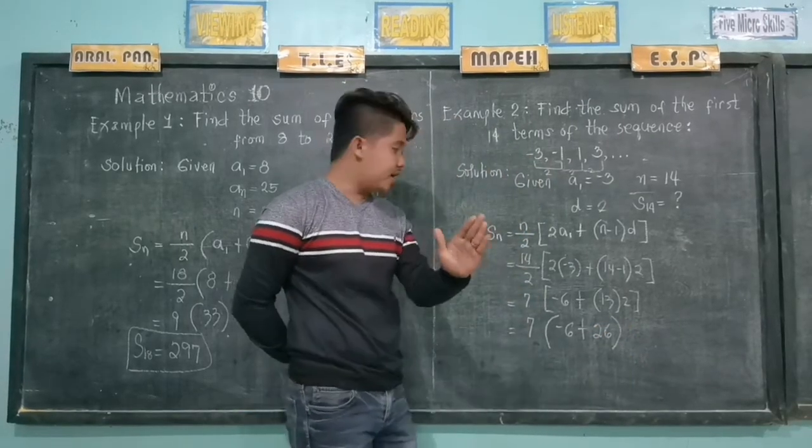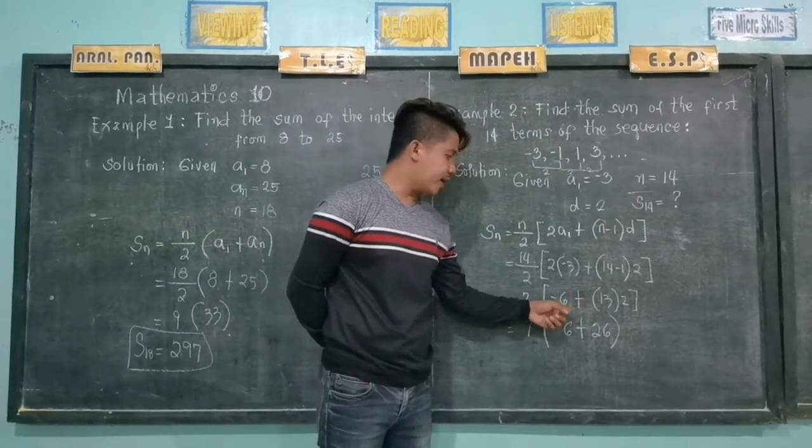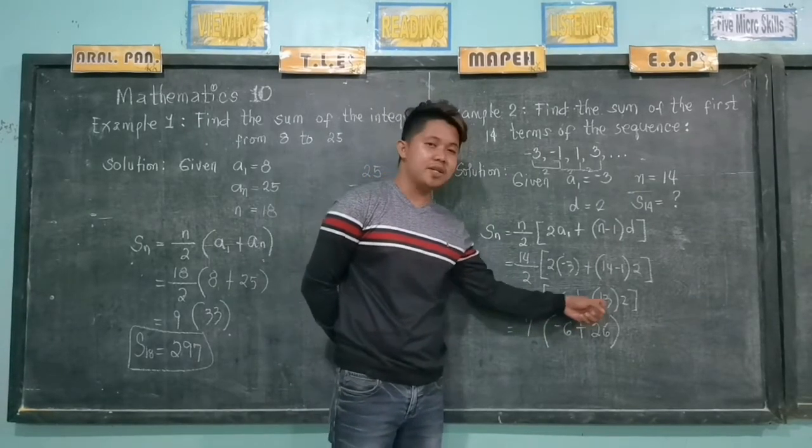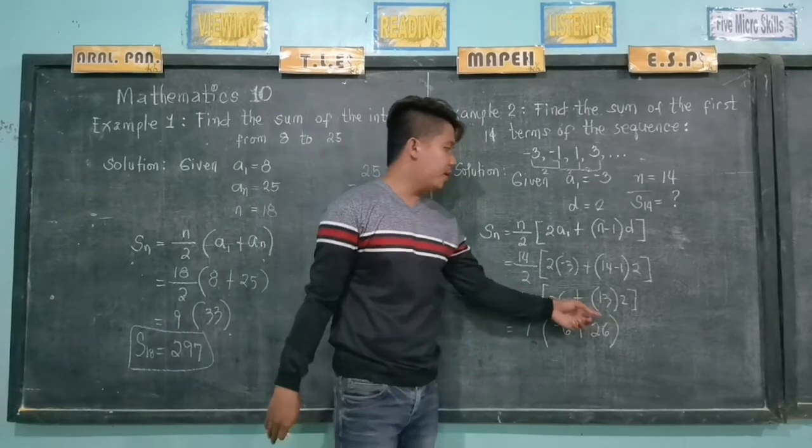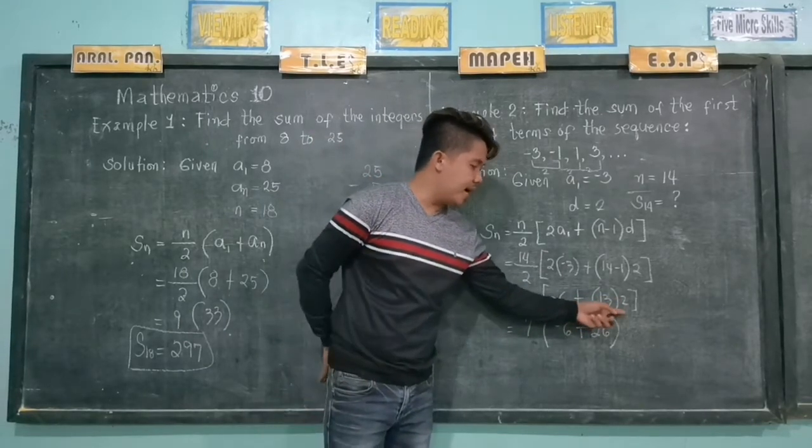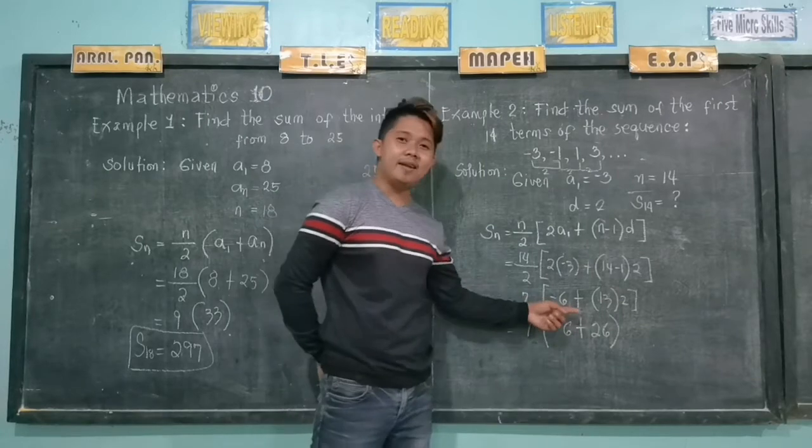Remember, you cannot directly add negative 6 plus 13, because of PEMDAS. We will first multiply before we can add.